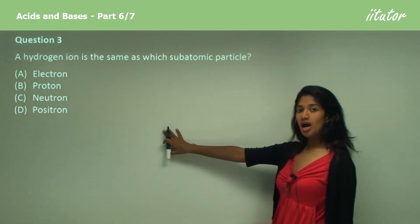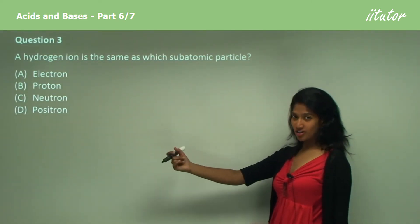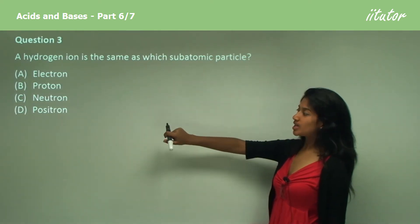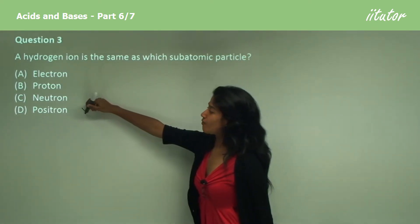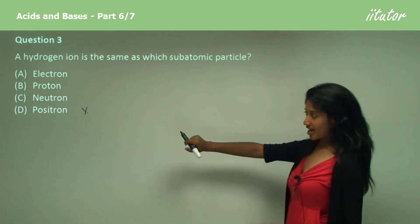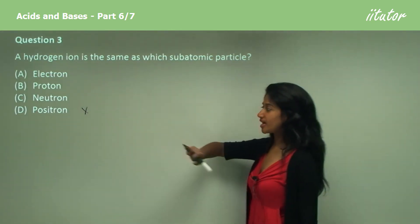A positron? A positron is a positively charged electron, and these are found in the nucleus. And we do not learn this for chemical reactions. So this does not take part in chemical reactions.